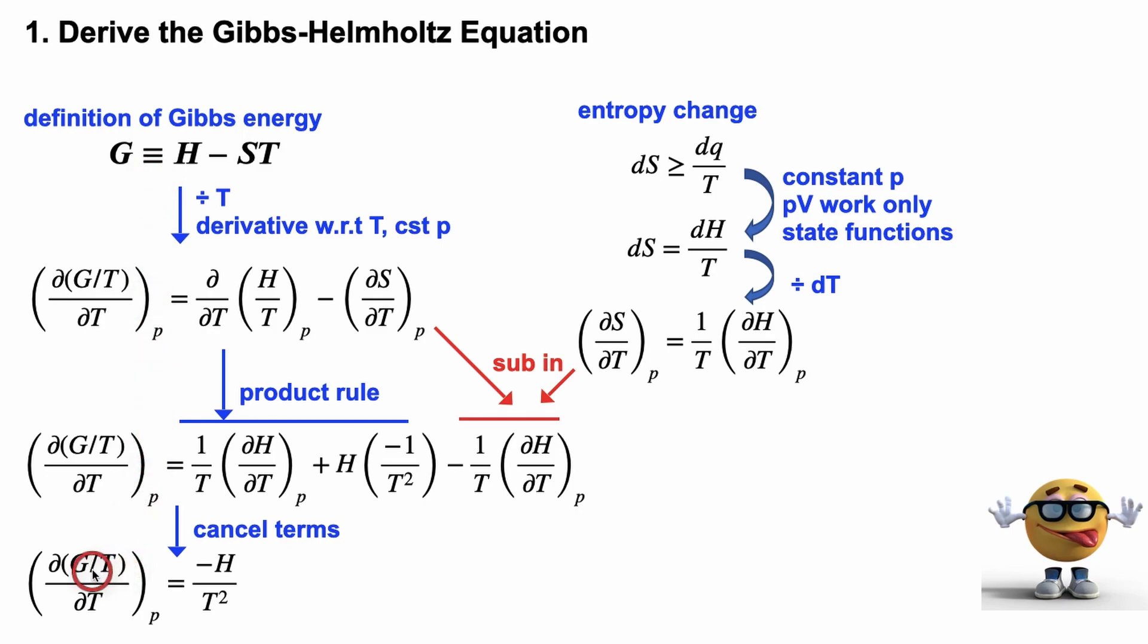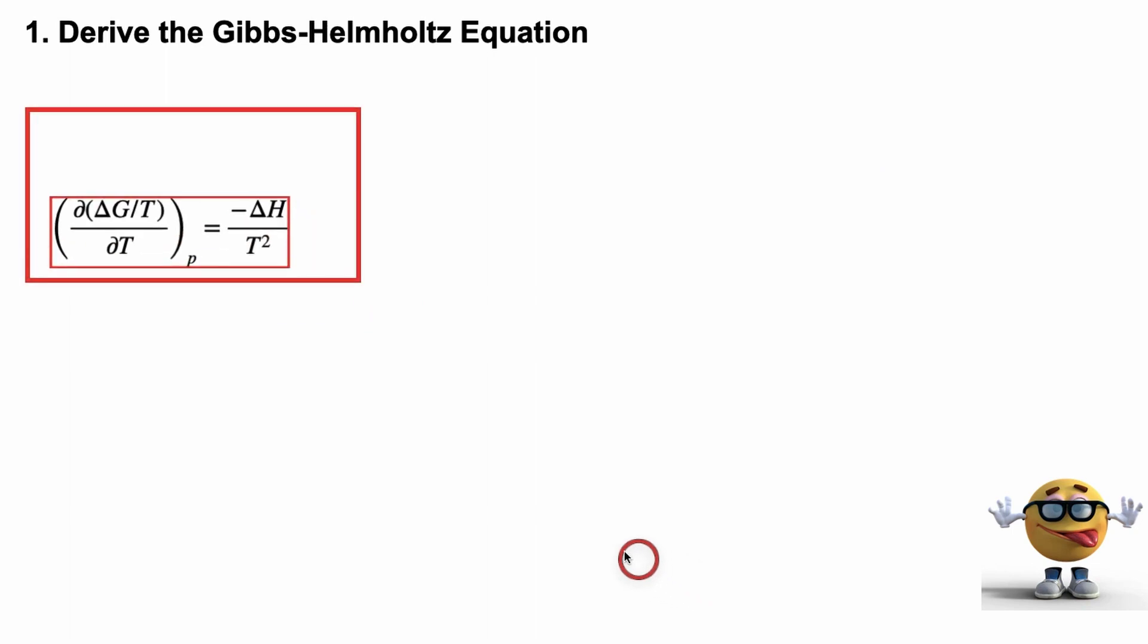Knowing that the change in a state function, the change in Gibbs energy, is equal to the final minus the initial state. And if we do that, we would get this change in here. So the partial derivative of delta G over T with respect to T holding pressure constant equals negative delta H over T squared. And this, my friends, is the Gibbs-Helmholtz equation in all its glory in differential form.